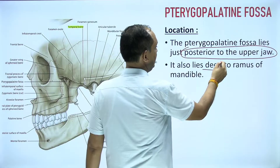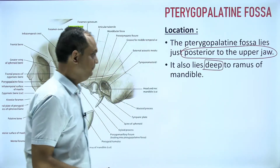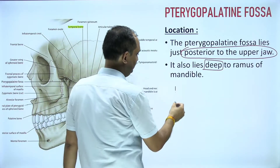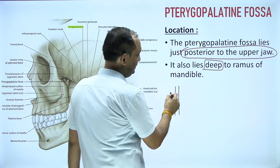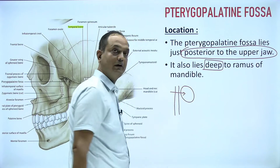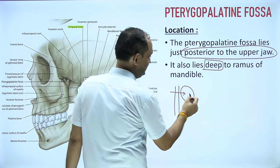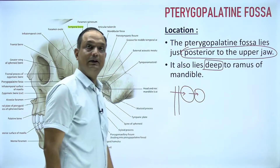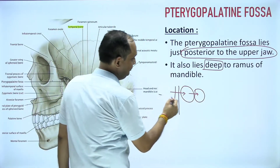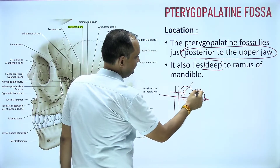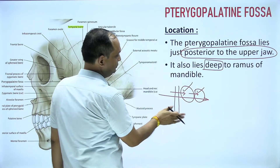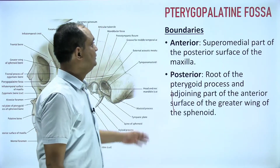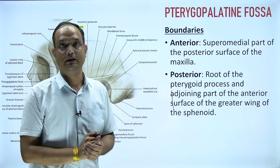It lies deep to the ramus of mandible. If you go from the ramus of mandible inward, first you will find the infratemporal fossa, and just deep to that you will find the pterygopalatine fossa. So from lateral to medial, to see both the infratemporal and pterygopalatine fossae, you have to first remove the ramus of mandible. Now, what are the boundaries of the pterygopalatine fossa?